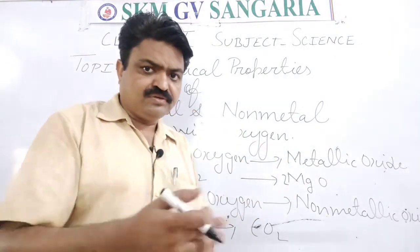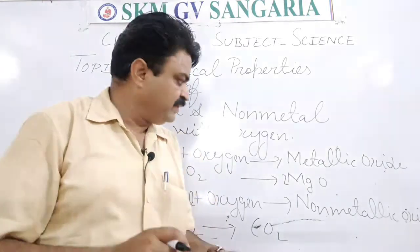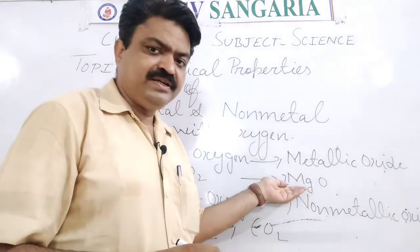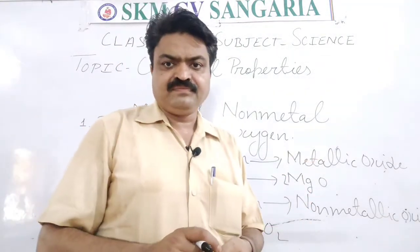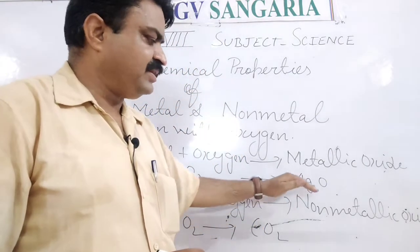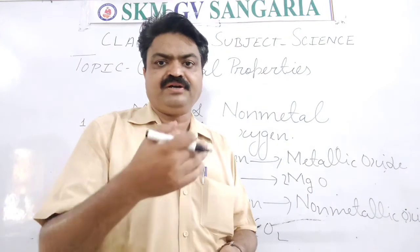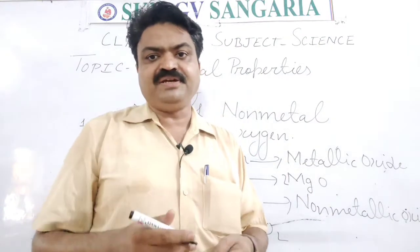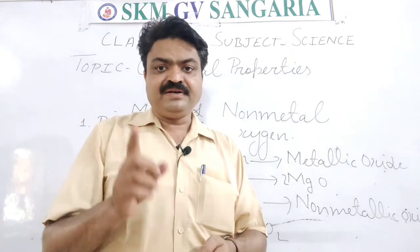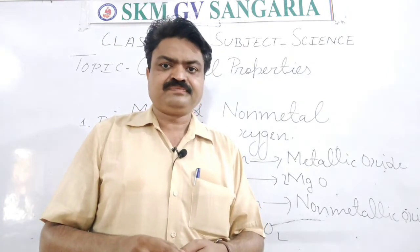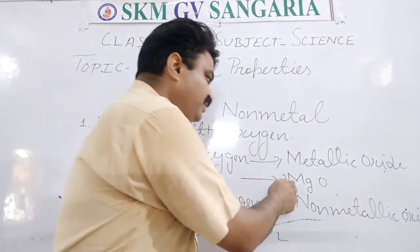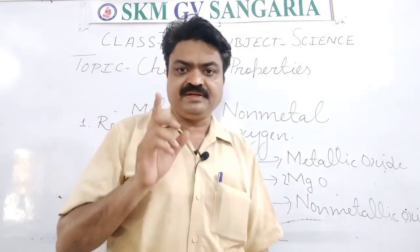These oxides have different chemical natures. Magnesium oxide is basic in nature. When it reacts with water it forms magnesium hydroxide, which is basic in nature. When we dip litmus paper in that solution, the red litmus paper changes to blue due to this basic nature.